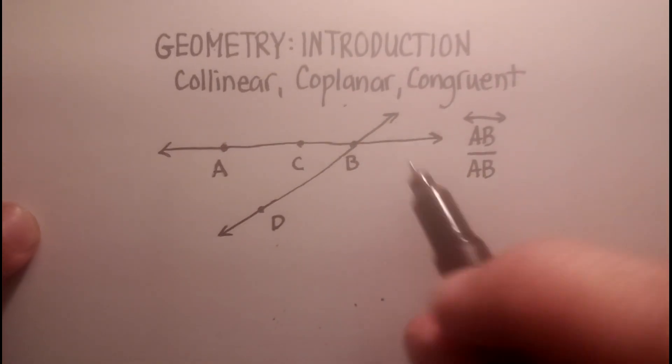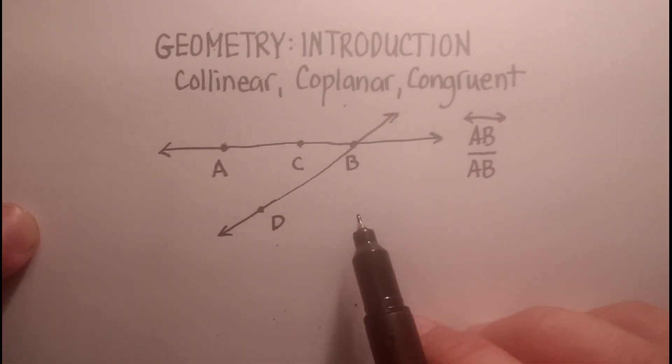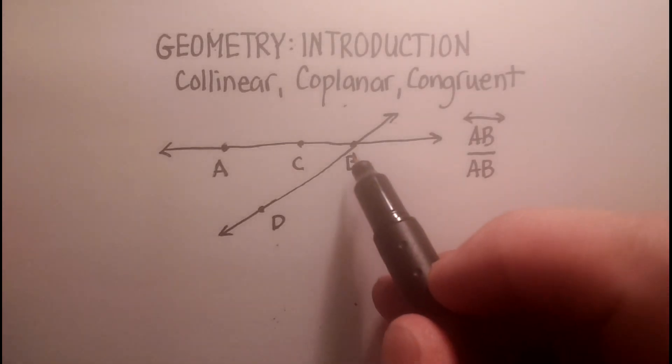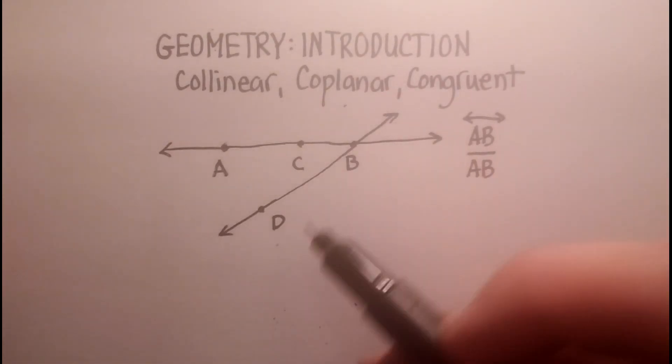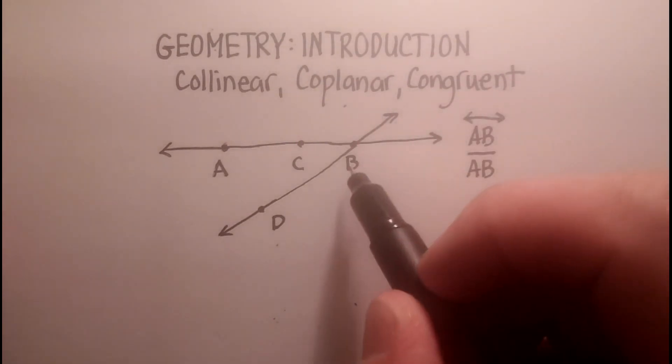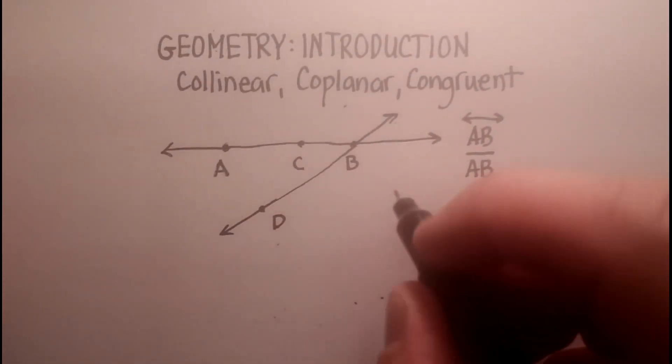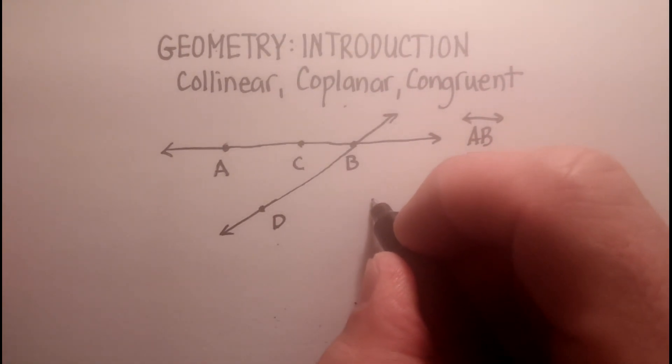So here's a question for you. What point is collinear with each of the other three points that I have designated here? And if you said point B, you'd be correct, but you'd have to be a little bit more accurate.